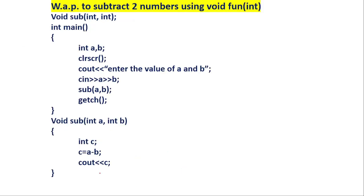Here is the second program. In this program, I have created subtraction of two numbers, but here I have created the main function before the function body — the function body is created at the end. You can also create your program this way, but in this case you have to write down the function prototype. This prototype tells the compiler that there is one more function body defined after main. So if you are following this method, you have to write down the prototype.